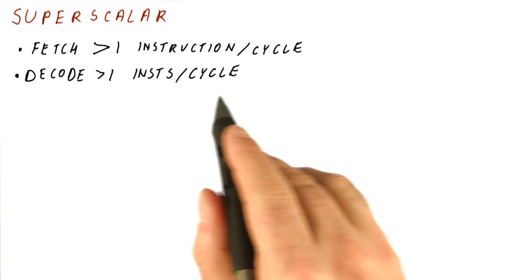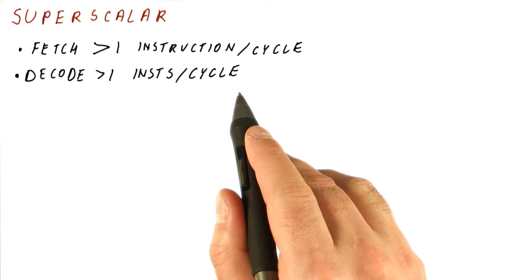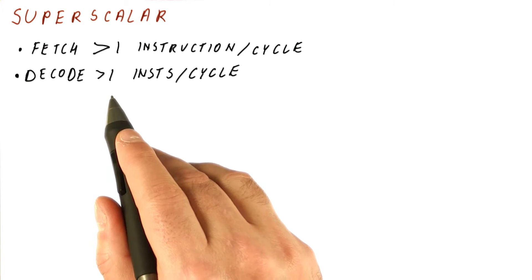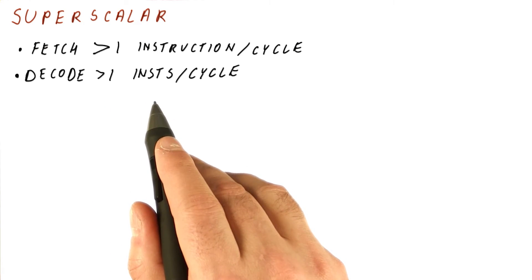Then, we need to decode more than one instruction per cycle. This amounts to basically having more than one decoder. So every cycle, the first decoder will be looking at the first instruction, while the second one will be looking at the second instruction we fetched, et cetera.